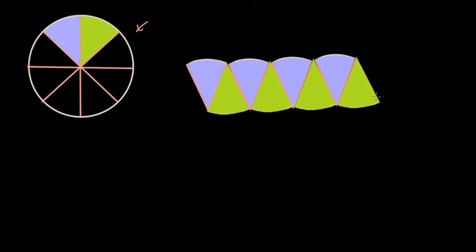the boundary of all these pies together is equal to the circumference of the circle. Now if the radius of this circle is r, then this side length is also going to be r.